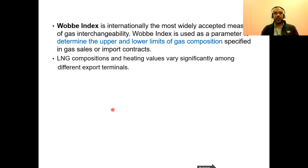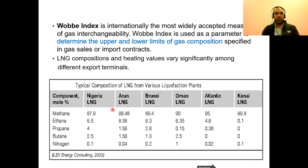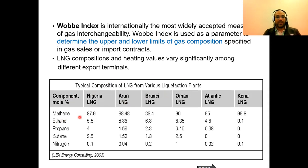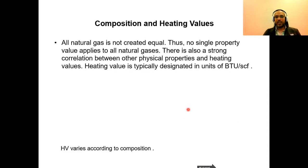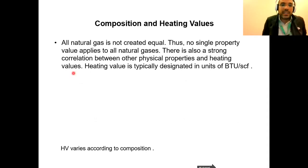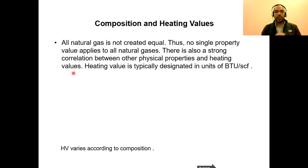LNG composition and heating value vary significantly among different export terminals. For example, Nigerian LNG has a methane content of 87.9%, Oman is around 90%, and K9 LNG is 99%. This shows how LNG composition varies between different countries. Heating value varies according to composition — natural gas is not created equal; it differs from site to site and country to country.